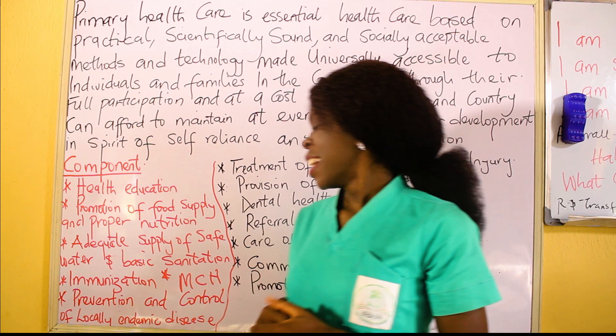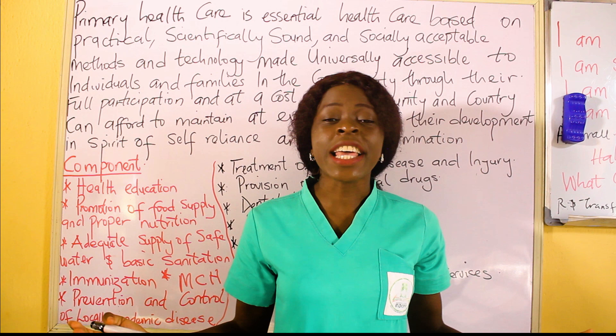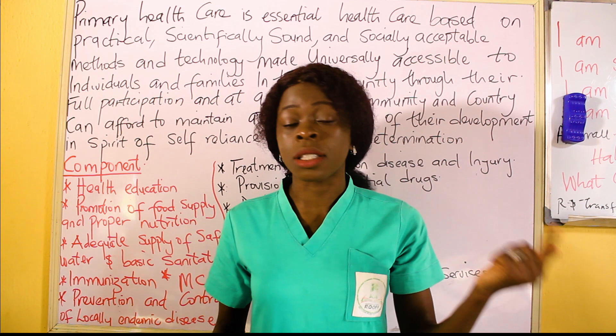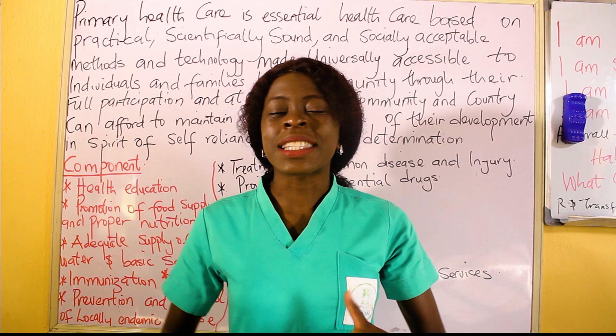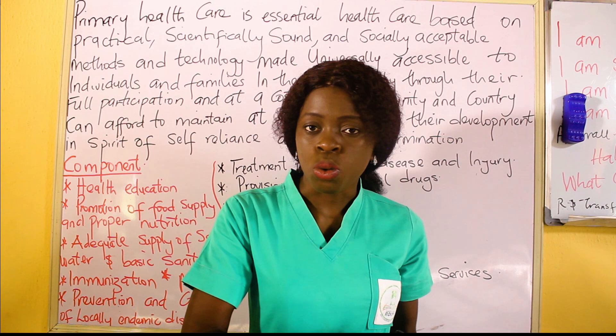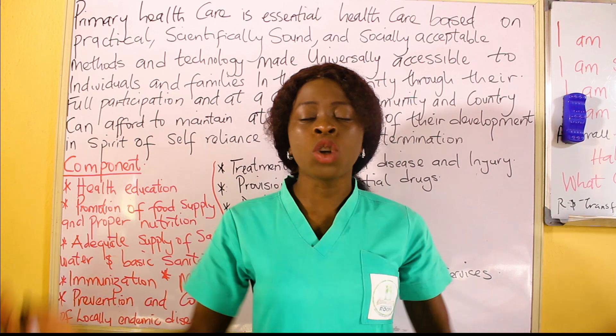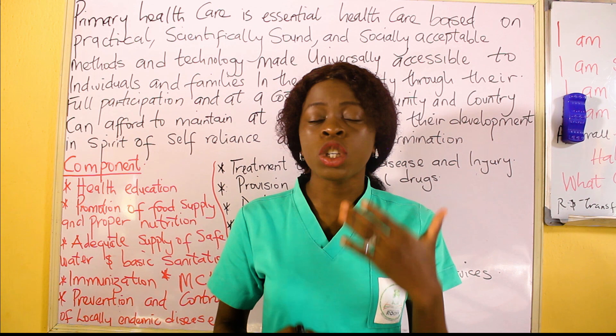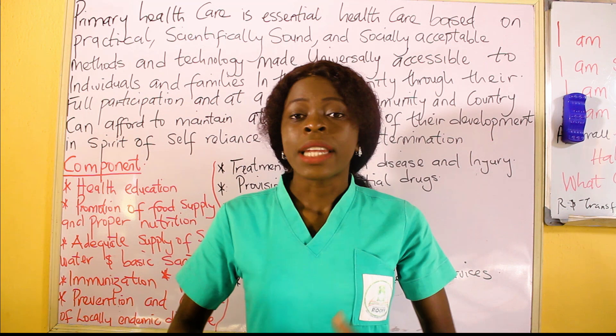Another component is prevention and control of locally endemic disease. It is the primary health care's duty to prevent locally endemic diseases such as malaria through health education. Once people know what to do, these diseases can be prevented. You also see NGOs partnering with health care centers to provide mosquito nets to help prevent mosquitoes generally.